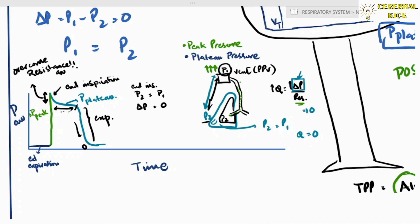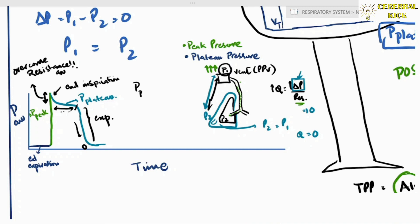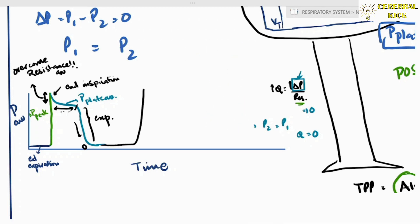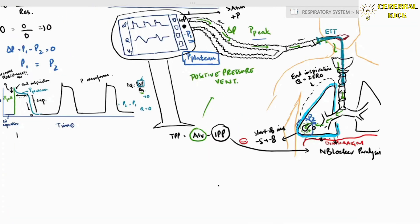The plateau pressure is the true alveolar pressure. To sum up: peak pressure represents pressures through the airways overcoming resistance, whereas plateau pressure signifies the true alveolar pressure at the end of inspiration when there is no flow.